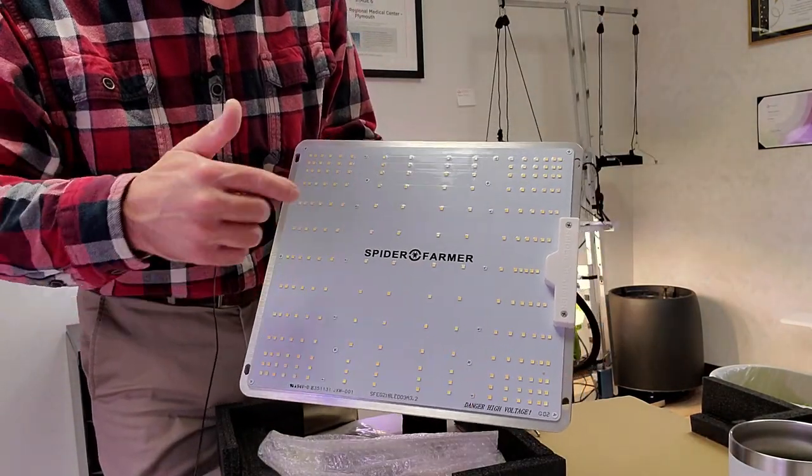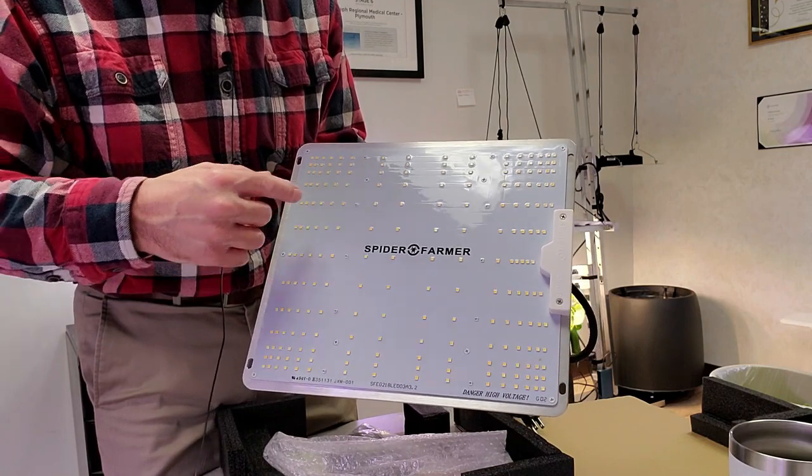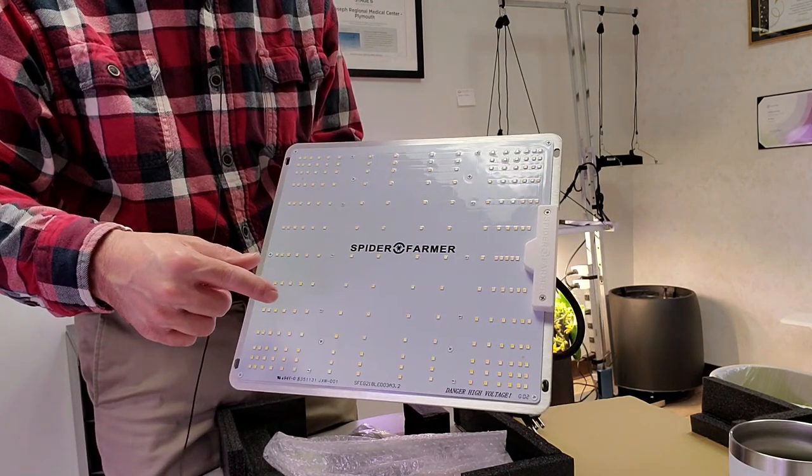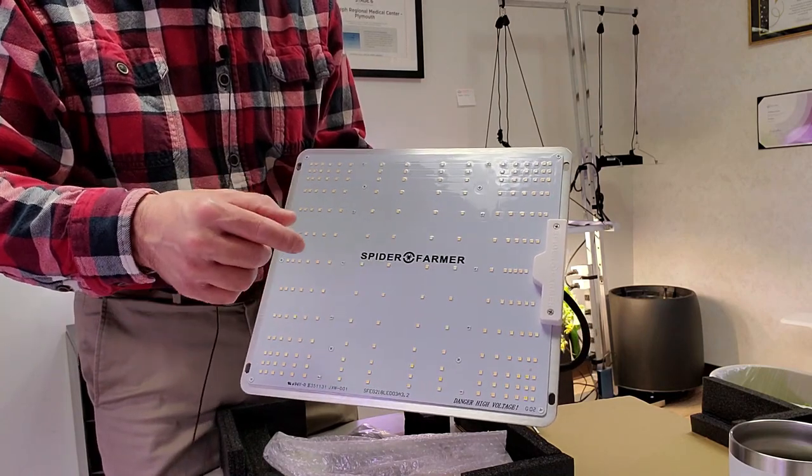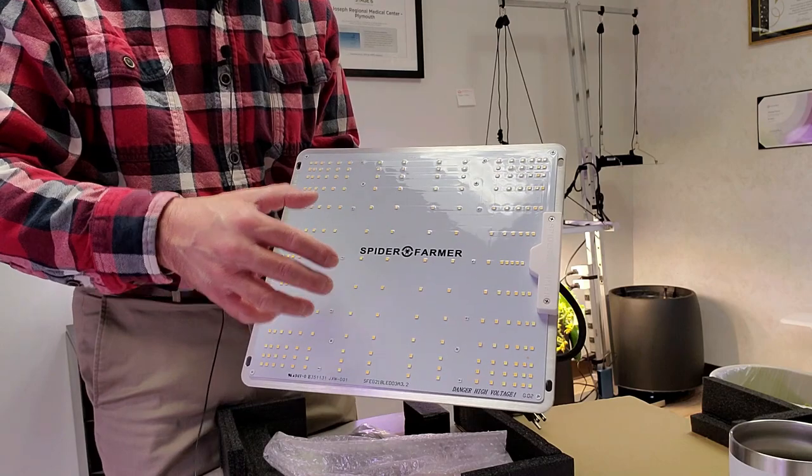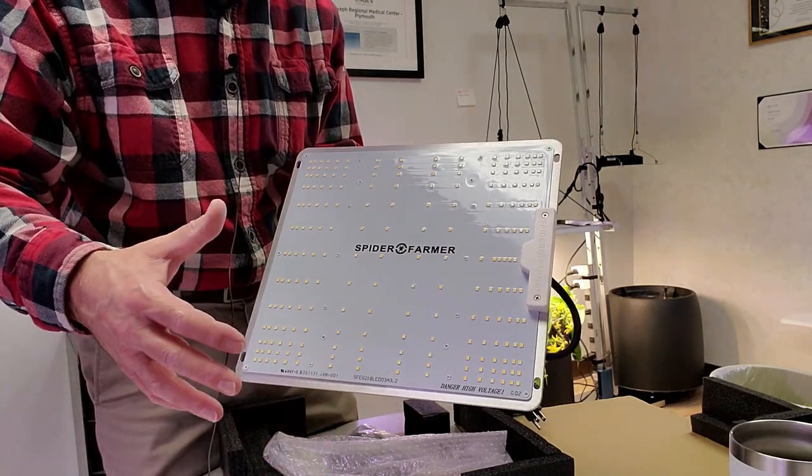One of the things about the Spider Farmer SF-1000 redesign is they've rearranged the diodes to give more even coverage. They're not evenly spaced. And that is fantastic because when you're growing, you don't want to burn the center of your plants. You want to have an even blanket of light across the top.